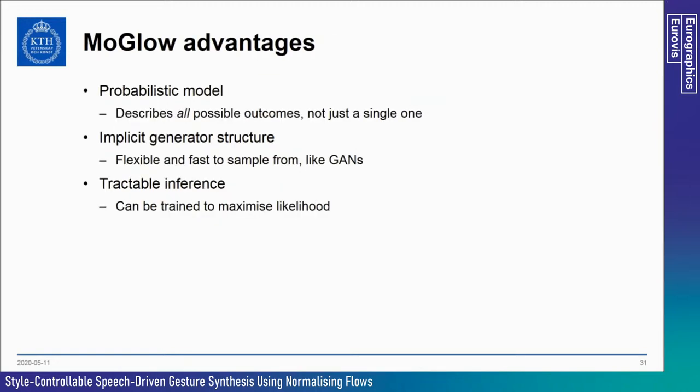This model has desirable properties for motion synthesis: it is probabilistic and describes all possible outcomes, not just one; it is flexible and fast to sample from, like GANs; but unlike GANs, it is easier to train and can be trained using exact maximum likelihood.